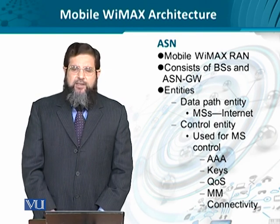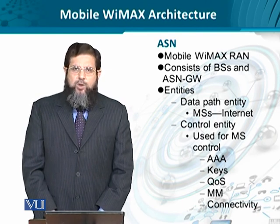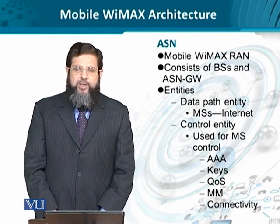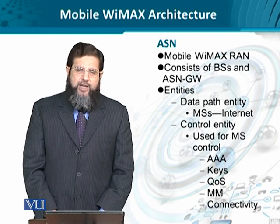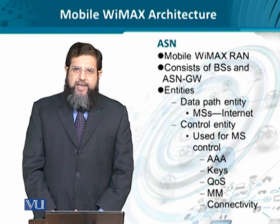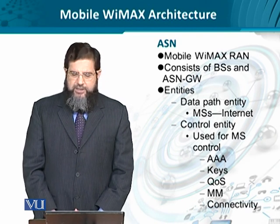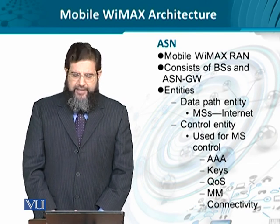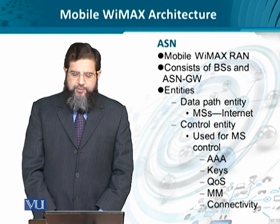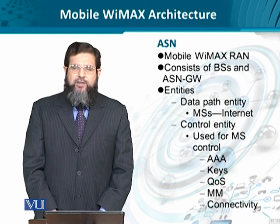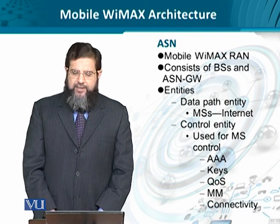The signaling service involves functionalities including authentication, AAA services, distribution of keys, quality of service enforcement, queuing, scheduling, and mobility management when a mobile station leaves one network premises and enters another, as well as maintaining connectivity. Once this control entity completes its functionality, the bearer path or data path is established between the mobile station and the internet.